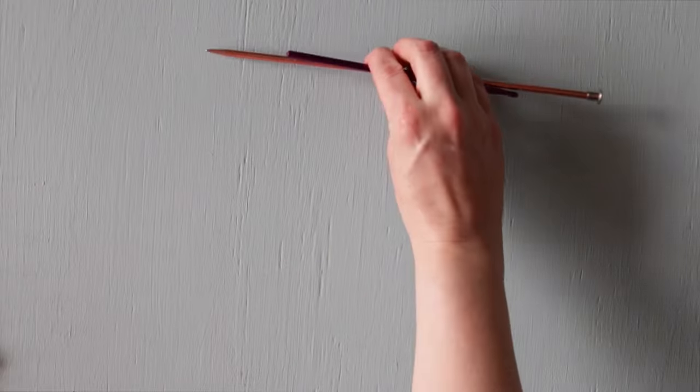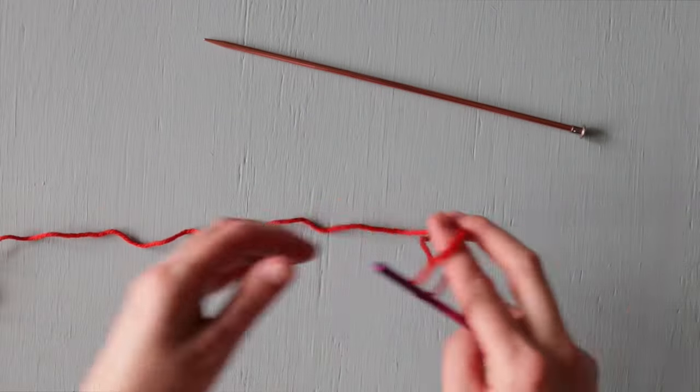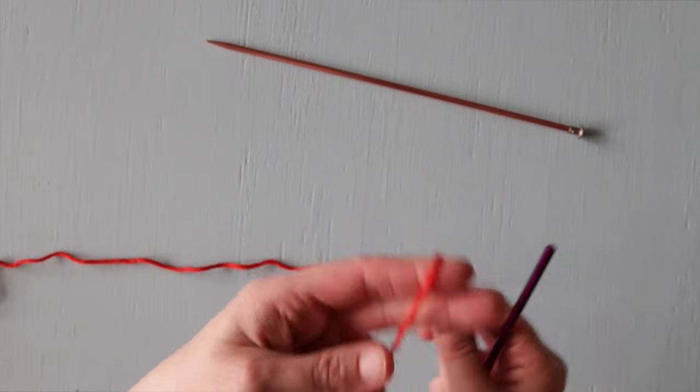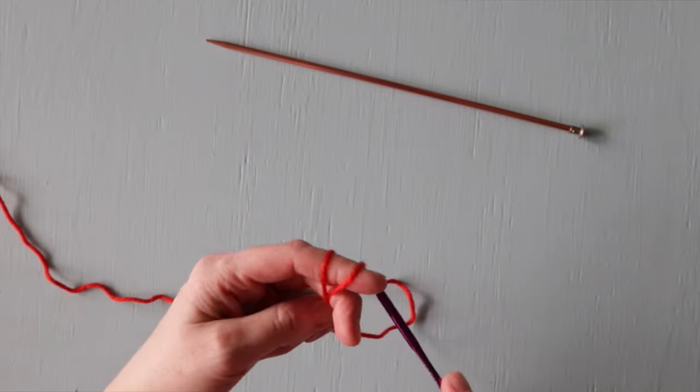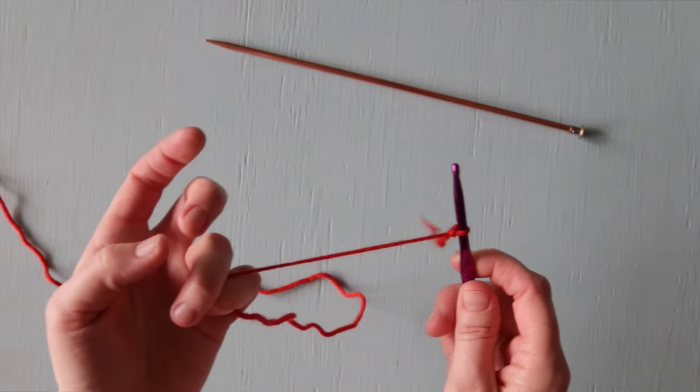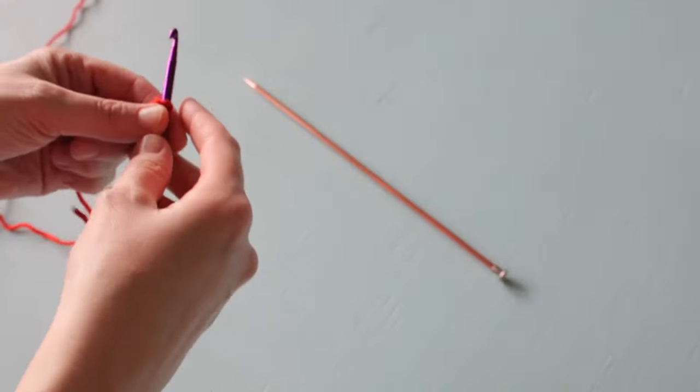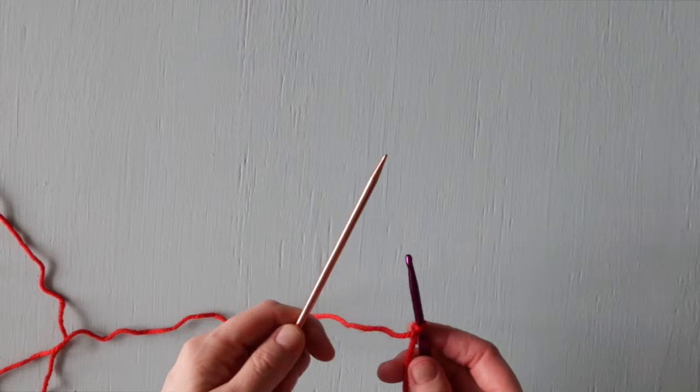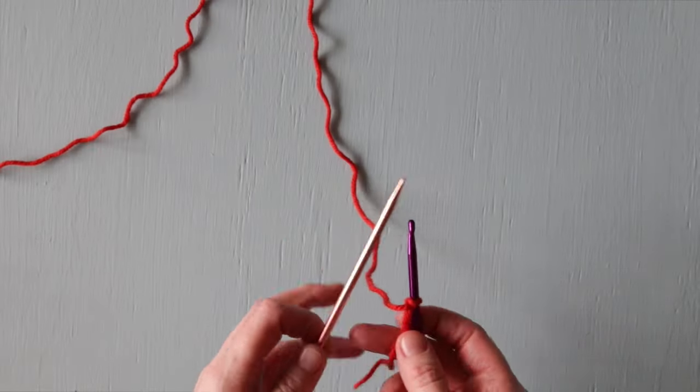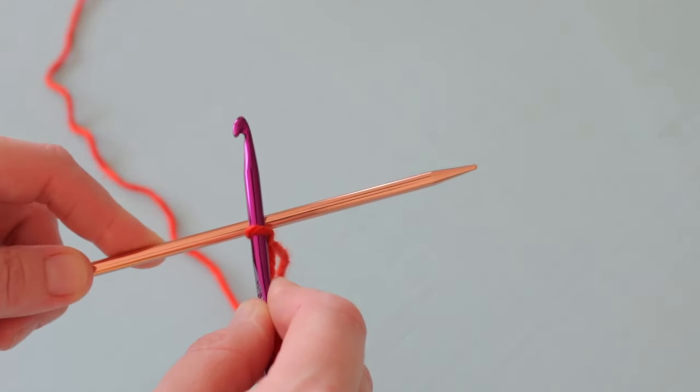To begin we're going to make a simple slipknot and tighten it up onto our crochet hook. Next we're going to take our knitting needle and cross our crochet hook over it forming an X.